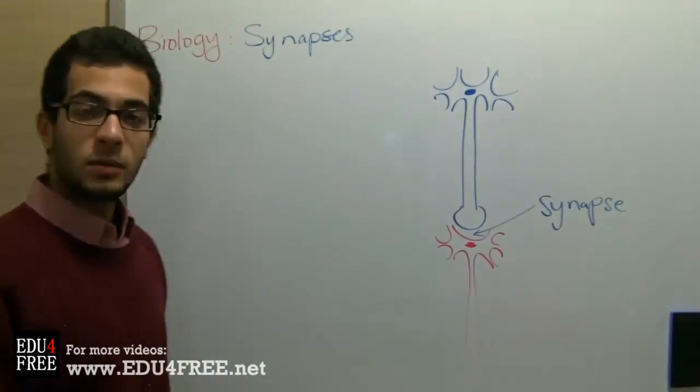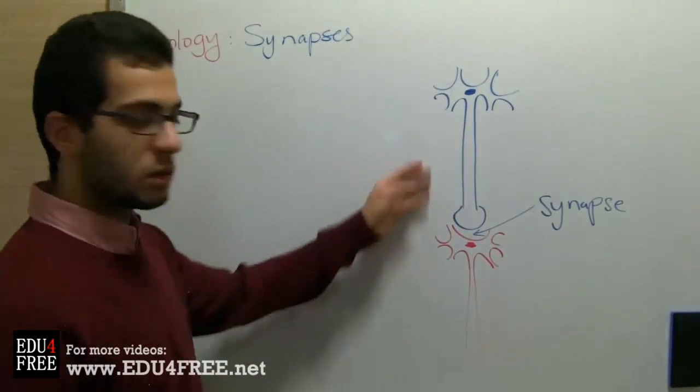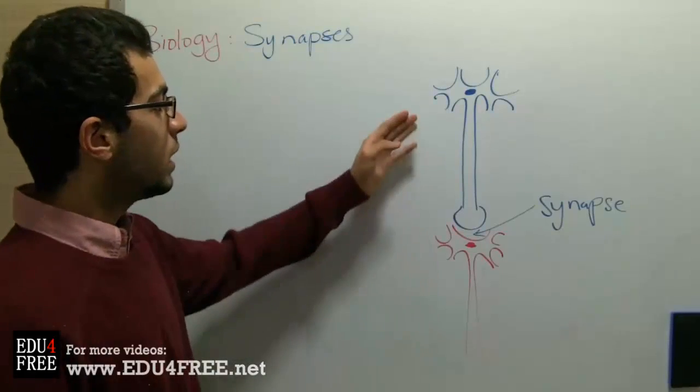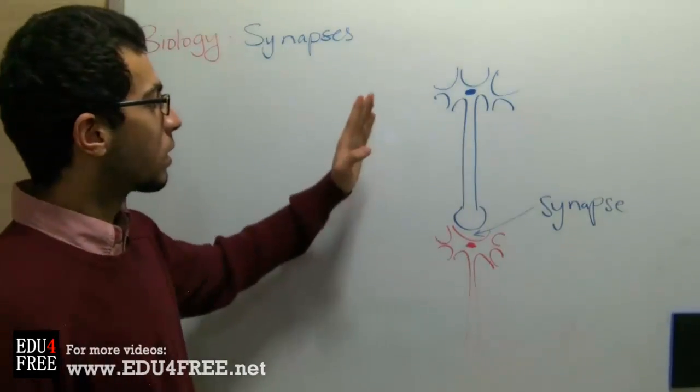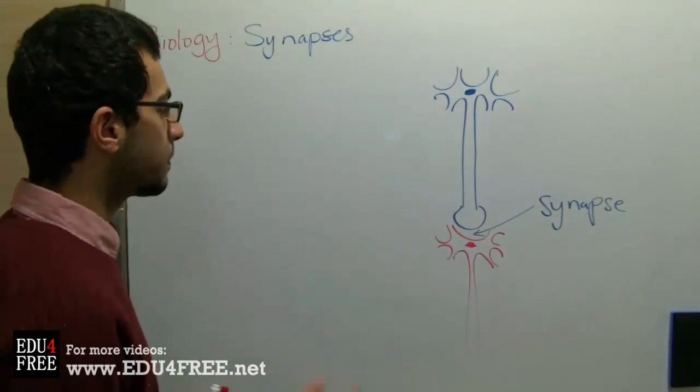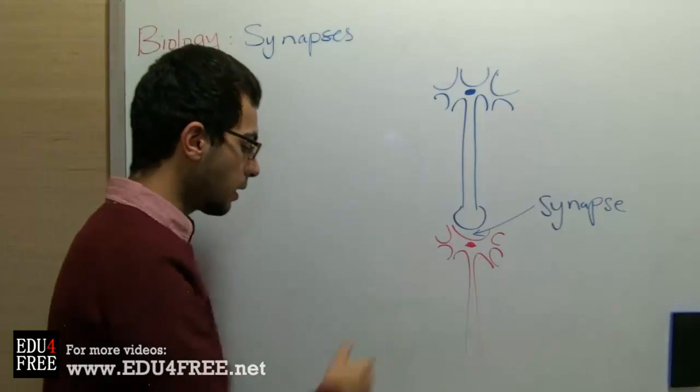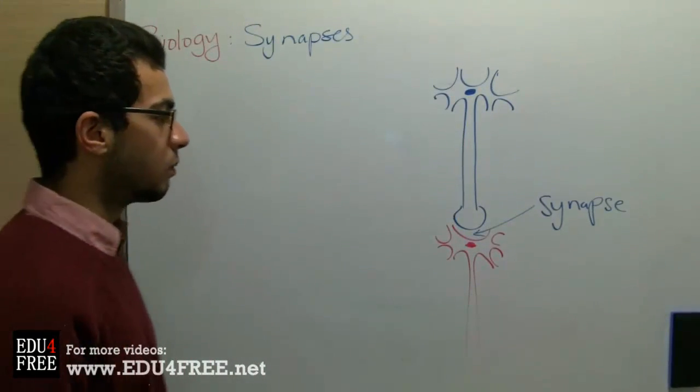Now we have three types of synapses: a synapse between two neurons, between a neuron and a glandular cell, or between a neuron and a muscle fiber. Neurons connect between each other and are also connected to glandular cells and muscle fibers.